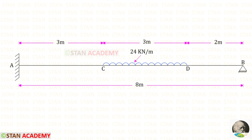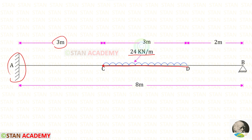Hello everyone. Today we are going to analyze this propped cantilever beam. In this beam, there is a uniformly distributed load of 24 kilo newton per meter. It starts at a distance of 3 meters and acts for a distance of 3 meters. The span of the beam is given as 8 meters.